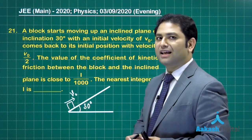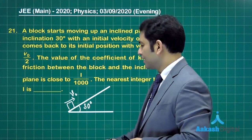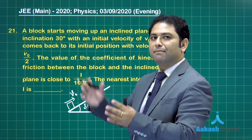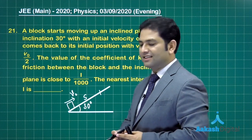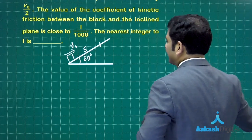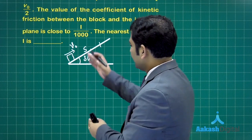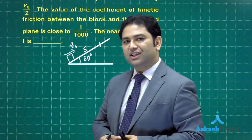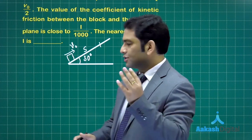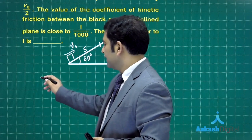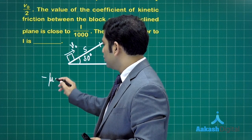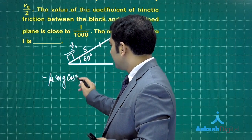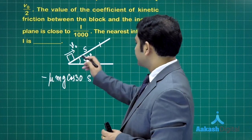We need to report the value of l, where mu equals l by 1000. What I'll do is say the block goes up by a distance s. I'll take the entire round trip - it goes and comes back. The change in potential energy is zero.